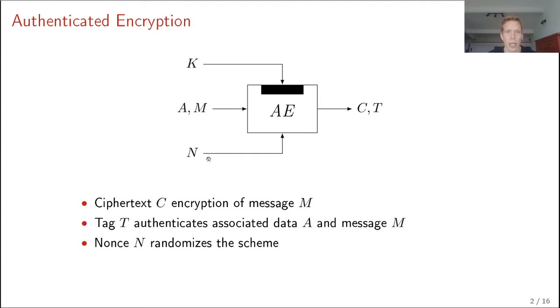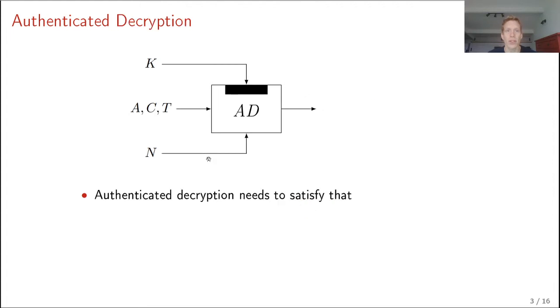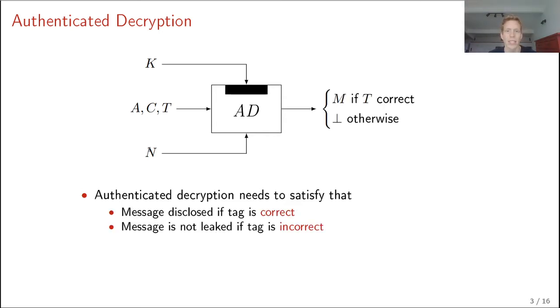And this nonce is optional. Associated with this function is also an authenticated decryption function, AD. The AD function gets as input the key, associated data, ciphertext and tag, and the nonce that was used for encryption. And the goal of the scheme is to verify whether the tag is correct. And if this is the case, return the original message. So it needs to satisfy that if the tag is correct, the original message is disclosed. And if the tag is incorrect, then nothing about the message should be leaked.